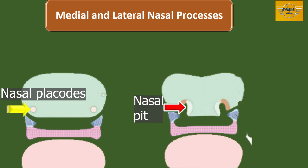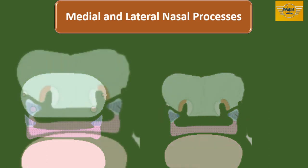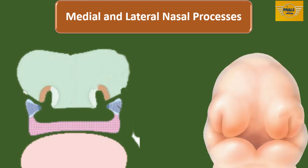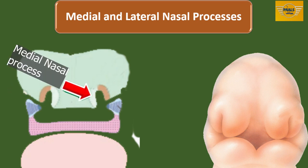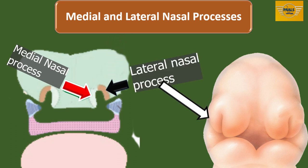The nasal placodes will invaginate, giving rise to depressions called nasal pits, which are continuous with the stomatodeum below. As the nasal placodes invaginate, the surrounding structures are elevated, giving rise to the medial and lateral nasal processes — the raised edges around each nasal pit. Each medial nasal process has an enlarged lower end called the globular process of His. The nasal placode, medial nasal process, and lateral nasal process are all derivatives of the frontonasal process.